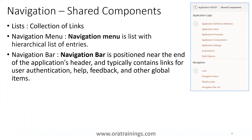Under the application's shared components, under navigation, we can see four things: list, navigation menu, breadcrumbs, and navigation bar. Breadcrumbs are covered in another session. In this session, we are discussing the remaining components: navigation list, navigation menu, and navigation bar. Let's understand some theoretical information about the list.